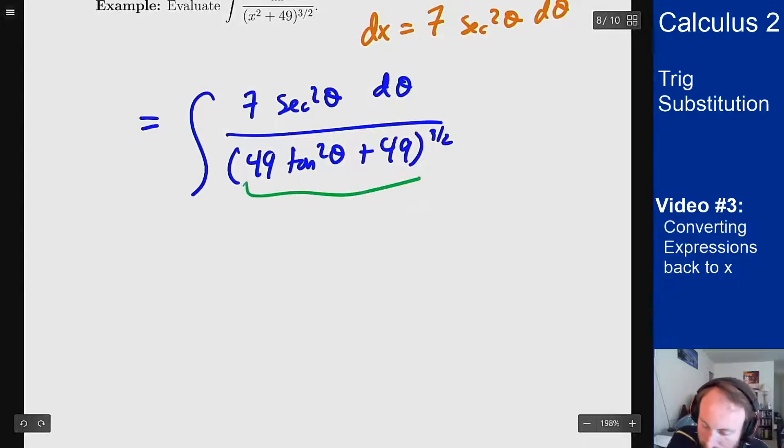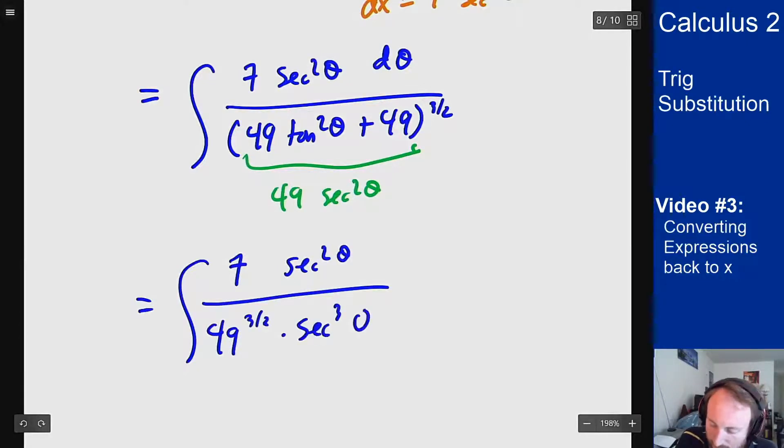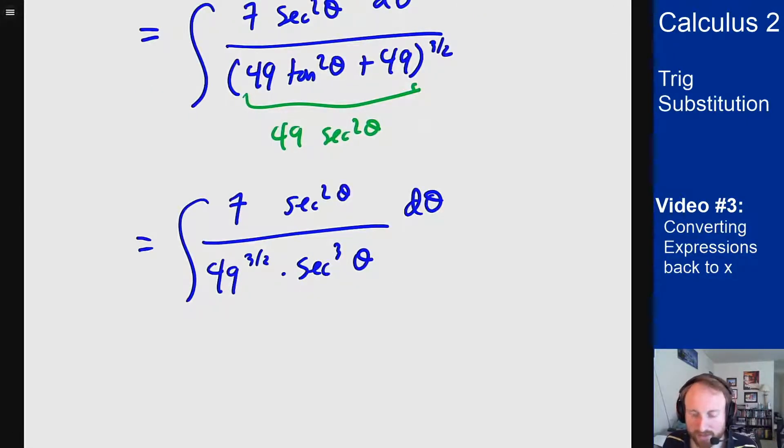This part here becomes a 49 secant squared theta. And so I will end up with a 7 secant squared theta on top, a 49 to the 3 halves times secant cubed theta on the bottom. 49 to the 3 halves is just 7 cubed.